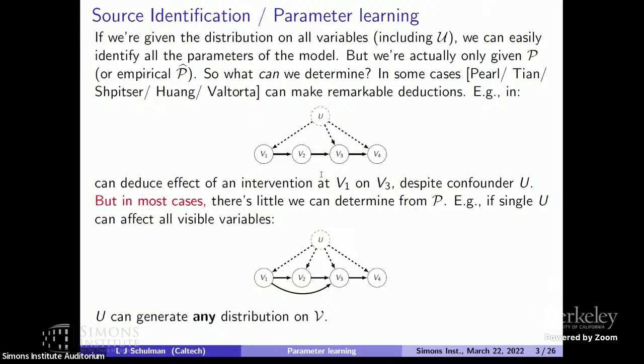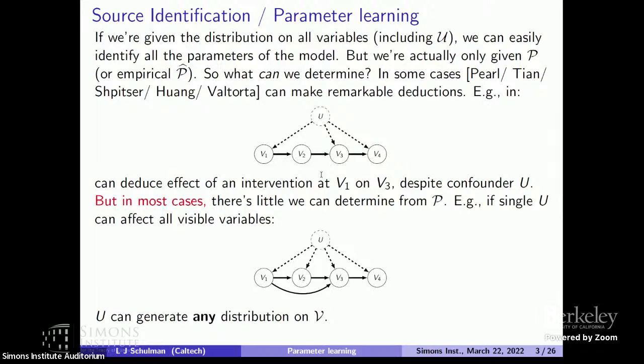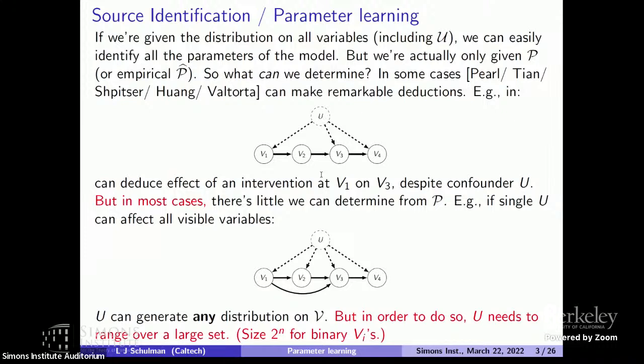In this graph you can figure out p(v3 | do v1), but in this graph you certainly cannot. In fact, since the hidden variable broadcasts to all other variables, this hidden variable could generate any probability distribution on the graph. There need not be any signaling carried by the directed edges at all — the hidden variable could be completely dictating what's happening, and you just have this illusion that there's something causal happening. It's all being handled by the man behind the curtain — the Wizard of Oz.